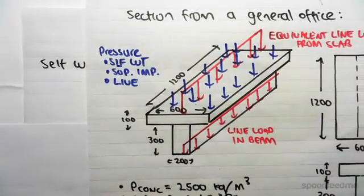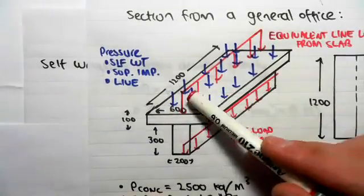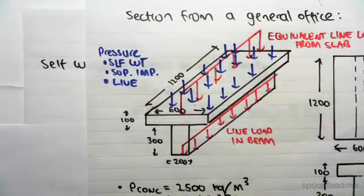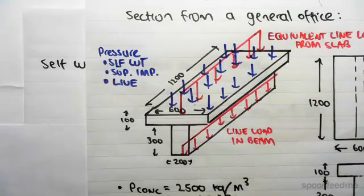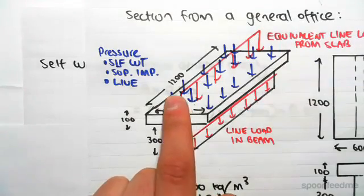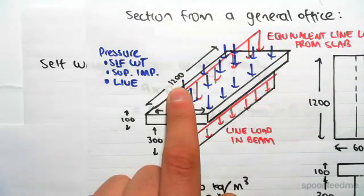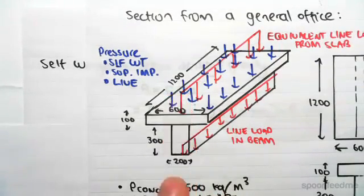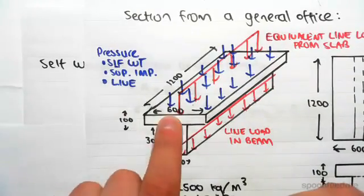We want to go from an area load or pressure in blue to a line load in red. The dimensions we multiply by, as I said, we exclude the dimension which is parallel to the line load. So in this case, the length 1200 we want to exclude. We're going to multiply by 100 and 600.